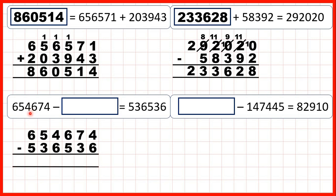We need to work out 654,674 minus 536,536, and that will give us our missing number. Now, 6 is larger than 4, so we go to the left, 1 less 1 in front, 14 minus 6 is 8, 6 minus 3 is 3, 6 minus 5 is 1.